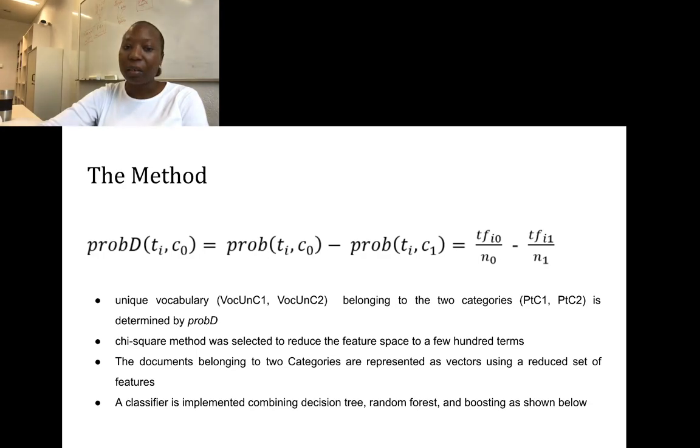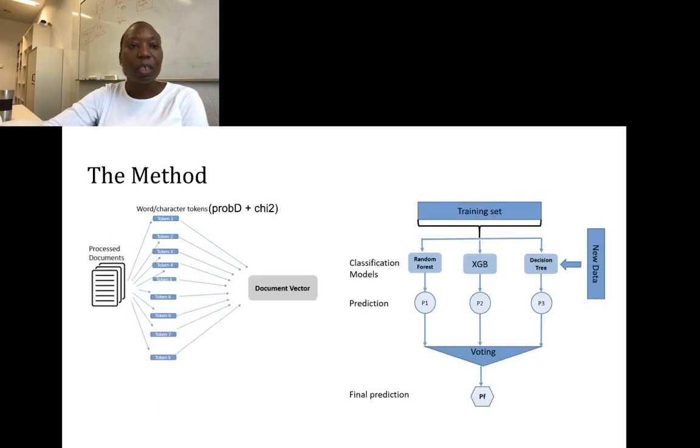The documents belonging to these categories are then represented as vectors using only a reduced set of features, considering the k selected features from Prob D and chi-square. The training set is transformed into a document vector and is used to learn a discriminative function.